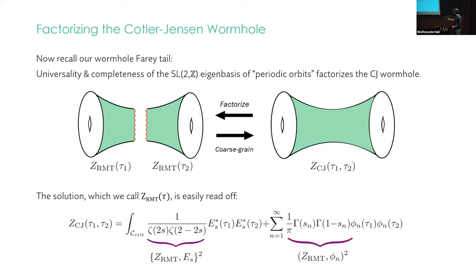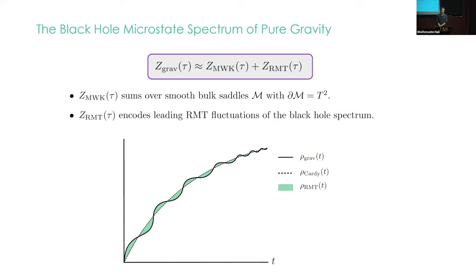So we can read this off from the wormhole amplitude. So here is the amplitude, written in a slightly different language. So these things here are just the squared overlaps. And this defines for us Z_RMT. In other words, the gravity partition function is the MWK piece, plus a new piece that we called Z_RMT, which I just gave the formula for in the spectral decomposition. The first term sums over smooth saddles. And the second term encodes the leading RMT-like fluctuations of the black hole spectrum. So in this picture from before, Z_RMT is this leading order approximation to the green stuff between these two lines.